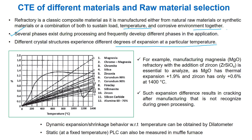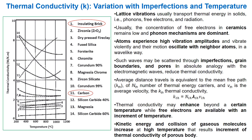Several dynamic CTE values of important oxides and refractory bricks are shown in the figure. For example, manufacturing magnesia refractory with the addition of zircon is essential to analyze, as MgO has a thermal expansion of +1.9 percent and zircon has only 0.6 percent at 1400 degrees centigrade. Such expansion difference results in cracking after manufacturing, not recognized during green processing. Dynamic expansion or shrinkage behavior can be obtained by dilatometer, and static PLC at a fixed temperature can also be measured through isothermal treatment.